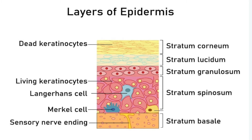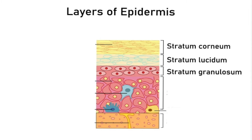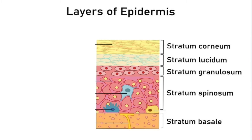If you look over to the right of the screen, you'll see the five layers of the epidermis. Each name starting with the word stratum. Let's start with the top, and then we'll work our way down to the bottom. First, we have the stratum corneum. Next, we have the stratum lucidum. Stratum granulosum. Stratum spinosum. And the stratum basale.